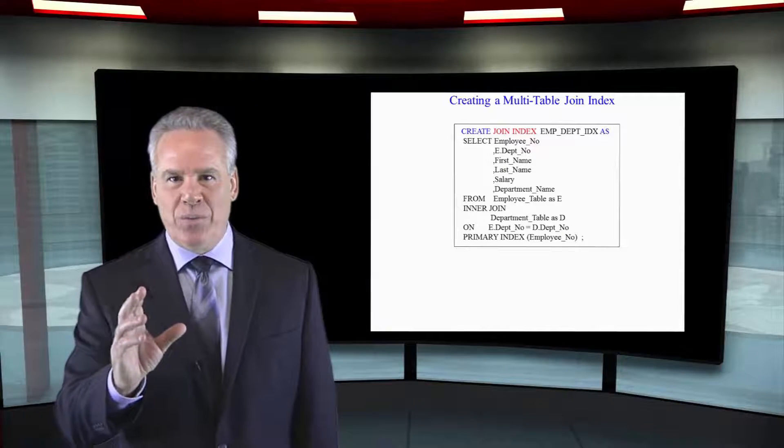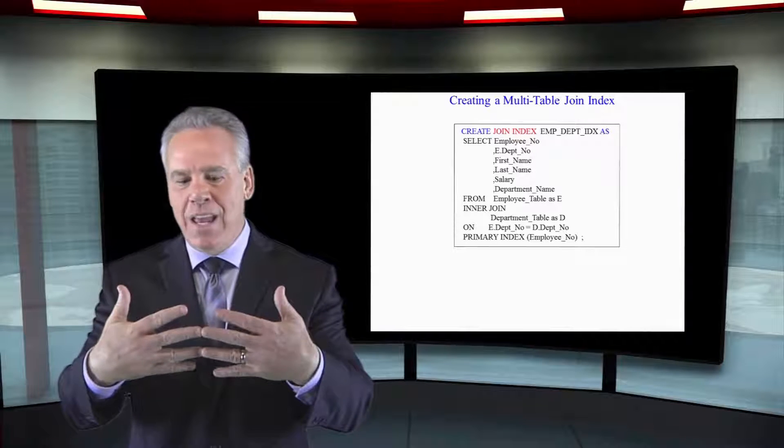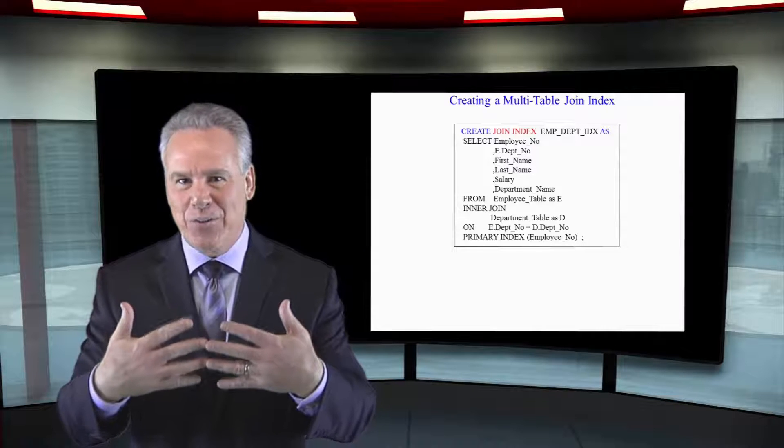So what a join index will do is it will join the rows together one time and keep a physical copy of those rows.